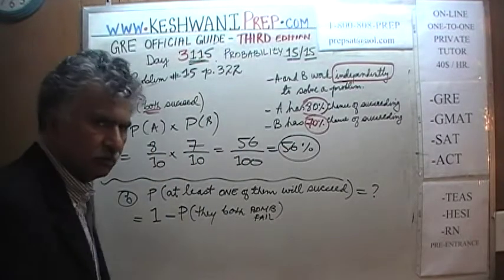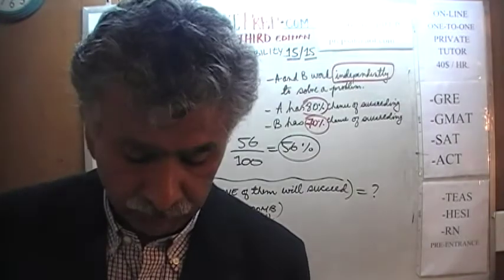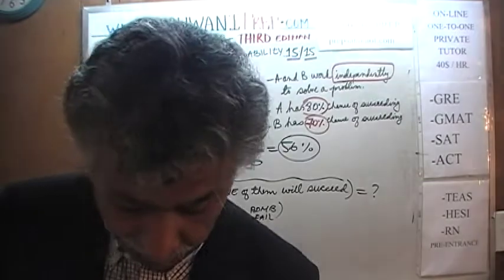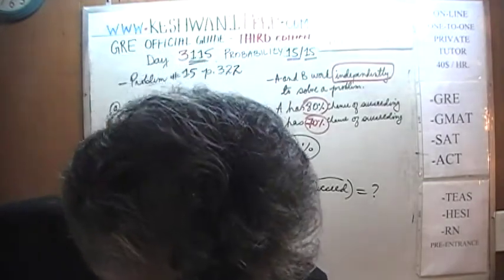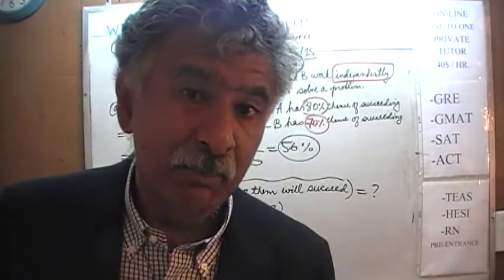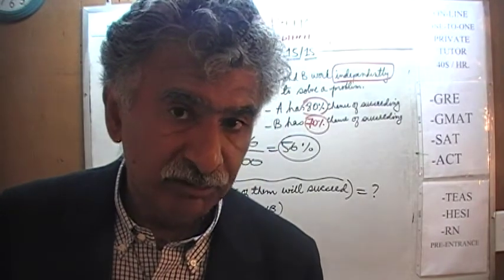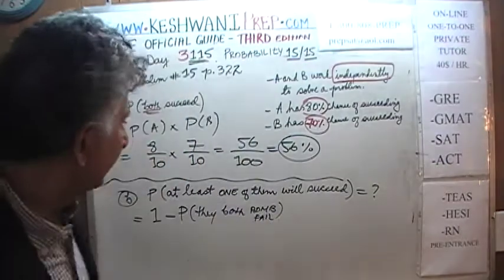We haven't found that out yet. We do not have the odds yet. We haven't calculated the odds of both of them failing which coincidentally happens to be part number 3. So they are asking us in part C the information that we need to answer part B. So why don't we do part C first?